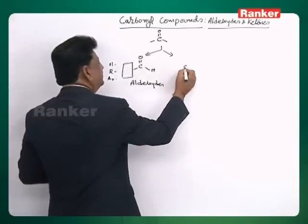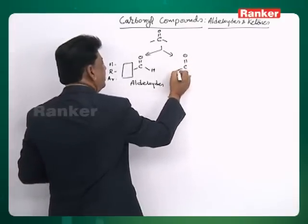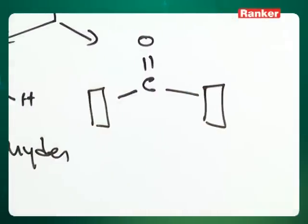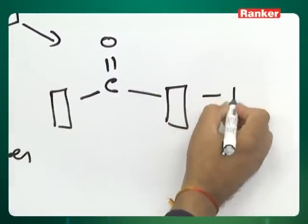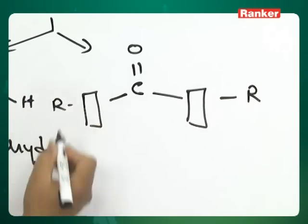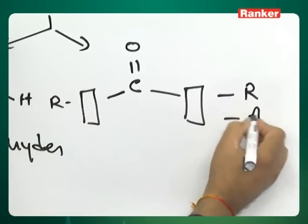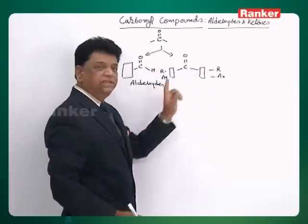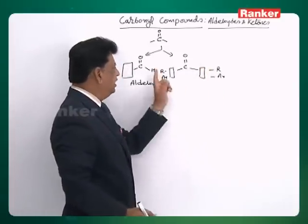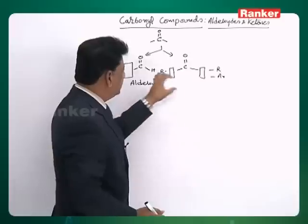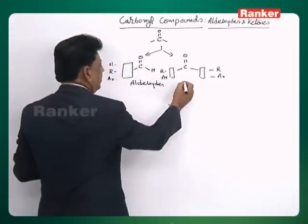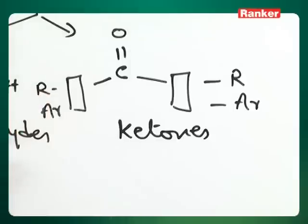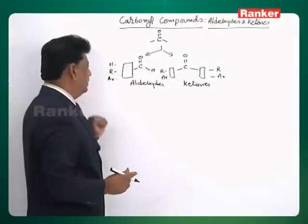The other class of compounds are carbonyl compounds that have options on both sides, but the option is not hydrogen. You can have either alkyl and alkyl, alkyl and aromatic, or aromatic and aromatic — that means two alkyls, two aromatics, or one alkyl and one aromatic. All these compounds come under ketones. Ketones will not have a hydrogen; if hydrogen is there, they come under aldehyde.